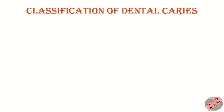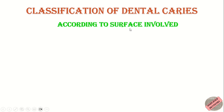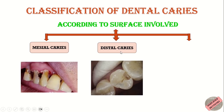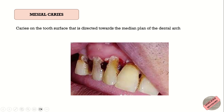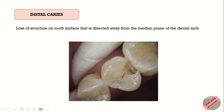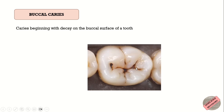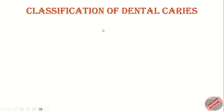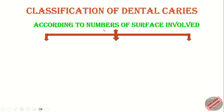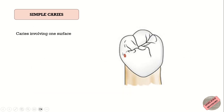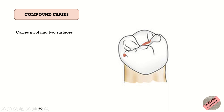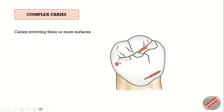Another classification is based on the surfaces involved. According to this, caries can be mesial, distal, or buccal. Mesial caries is caries on the tooth surface directed towards the median plane of the dental arch. Distal caries is loss of tooth structure on the surface directed away from the median plane. Buccal caries begins with decay on the buccal surface of a tooth. According to the number of surfaces involved, caries can be simple (one surface), compound (two surfaces), or complex (three or more surfaces).